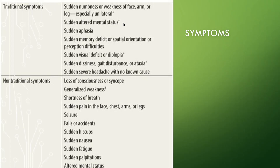Sudden altered mental state is common — a patient was fine, suddenly couldn't talk, couldn't walk. Sudden aphasia, inability to talk, memory deficit, spatial orientation and perception difficulties, sudden visual deficit, diplopia. Sudden visual deficit in isolation is difficult because it could be a primary ophthalmic problem or a CVA. Most of us not highly trained in ophthalmology can't say specifically whether it's the eye or the brain, so we need a specialist, but luckily it doesn't often happen in isolation.